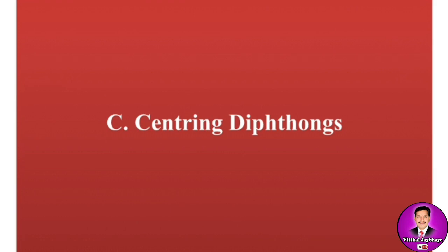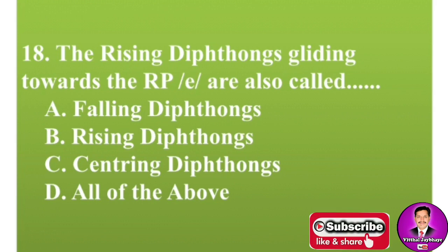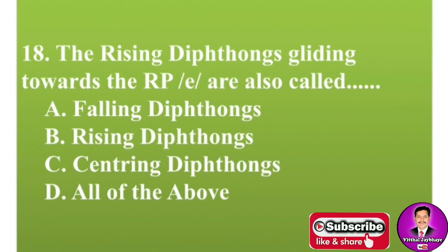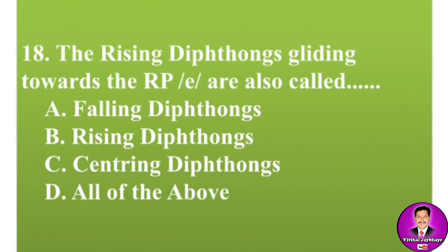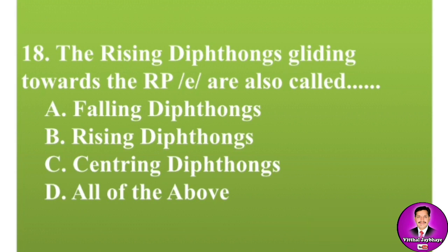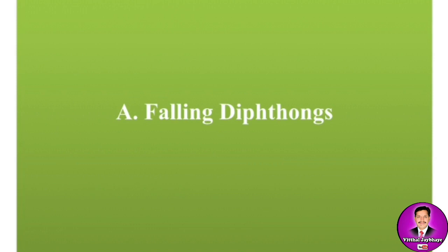Next and last MCQ — friends, these are only examples; there can be hundreds of MCQs on vowels, on vowel description, on various parts, and on the pronunciations of various words. The rising diphthongs gliding towards the received pronunciation /ə/ are also called — options are: A, falling diphthongs; B, rising diphthongs; C, centering diphthongs; D, all of the above. The correct answer is A — falling diphthongs.